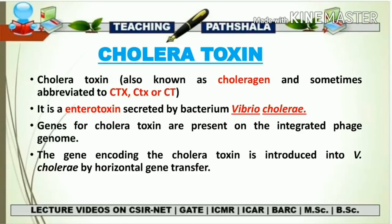Now let's talk about the cholera toxin. The cholera toxin is also known as cholergen and it is sometimes abbreviated as CTX or CT. This cholera toxin is regarded as an enterotoxin, meaning it has the capability to affect the intestinal cell, and it is mainly secreted by a bacterium known as Vibrio cholerae.